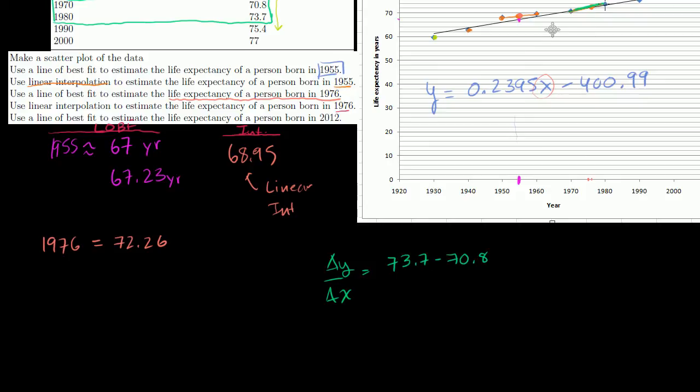It's going to be 73.7 minus 70.8, that's how much we changed in the y direction, divided by how much we changed in the x direction, 1980 minus 1970. So this is going to be equal to, 3.7 minus 0.8 is 2.9, so it's 2.9 over 10, or it's equal to 0.29. We changed 2.9 years in life expectancy every 10 years over that time period right there, or 0.29 per year.